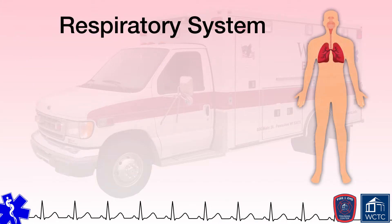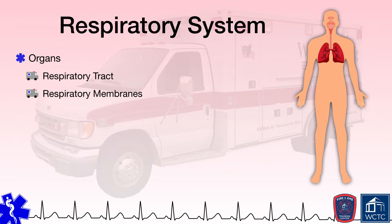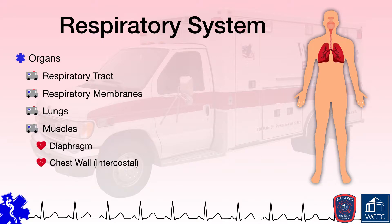The respiratory system consists of the respiratory tract for oxygenated air movement into and out of the system, respiratory membranes where oxygen and carbon dioxide gas exchange occurs, the lungs, and several muscles that drive pressure differentials in the system to move air into and out of the body, such as the diaphragm, intercostal muscles in the chest wall, and other accessory muscles of the muscular system.